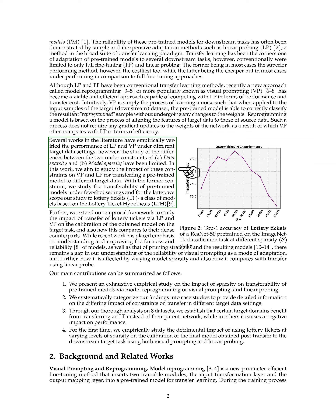While there has been a lot of research into the performance of linear probing and visual prompting under different conditions, there has been less focus on how these methods perform under constraints of data sparsity and model sparsity. In this paper, we aim to explore how these constraints affect the transfer of a pre-trained model to different target data using visual prompting and linear probing. We'll look at how these methods perform in situations where there is limited data available, and we'll also examine their performance with lottery tickets, which are based on the lottery ticket hypothesis.